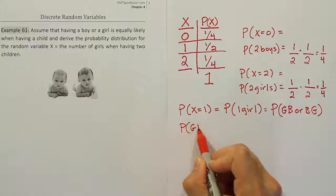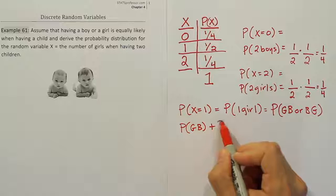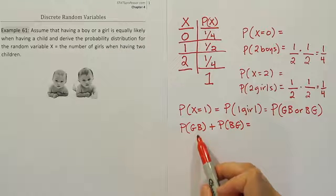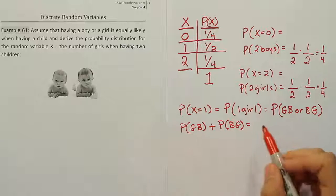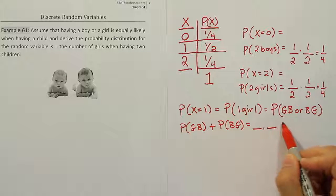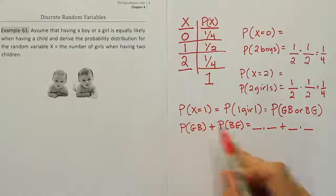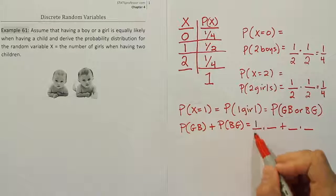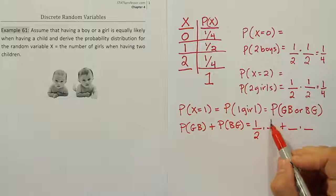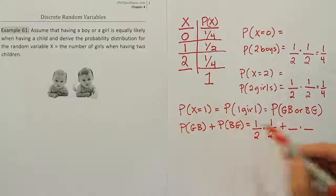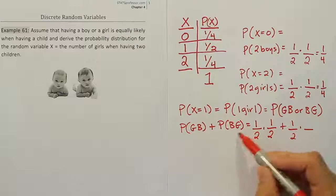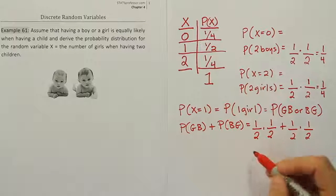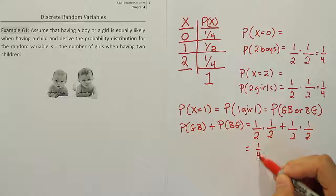So we're going to say the probability of girl-boy plus the probability of boy-girl. Since girls and boys are equally likely here, both of these work out to be two fractions multiplied. So it'll be two fractions multiplied plus two fractions multiplied. Since they're equally likely, the chance we have a girl on the first birth is one-half, the chance we have a boy is one-half, and then likewise the chance we have a boy is one-half and the chance we have a girl is one-half. So we end up with a fourth plus a fourth, which of course is just simply one-half—a quarter plus a quarter equals one-half.